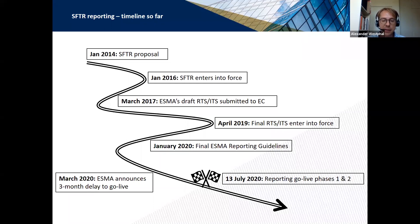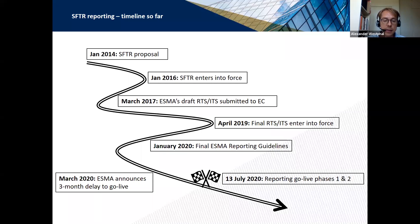Starting with the high-level SFTR timeline: it has been indeed a long and winding road — six and a half years from the initial proposal back in 2014 until the 13th of July this year, when we saw the start of SFTR reporting, at least for firms in the first two phases — the banks and investment firms, but also CCPs and CSDs. That was of course three months later than initially planned, thanks to the delay granted by ESMA back in March — very welcome and much-needed relief in the quite extraordinary circumstances of this year.